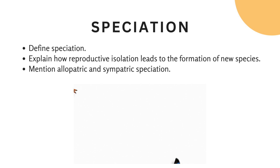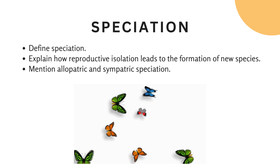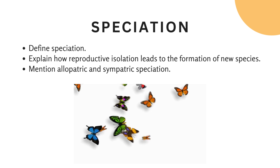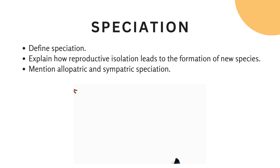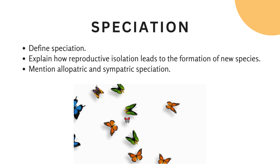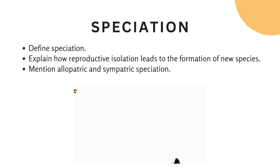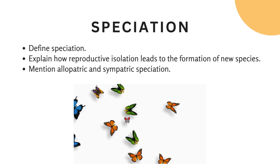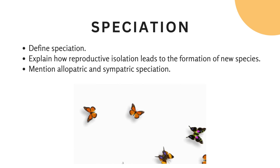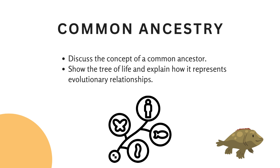From there, we'll explore speciation — the process by which new species arise. We'll discuss how reproductive isolation leads to the formation of distinct species, and we'll delve into examples of both allopatric and sympatric speciation. The idea of common ancestry unites all life on Earth. We'll examine the tree of life, which represents the interconnectedness of all living organisms.